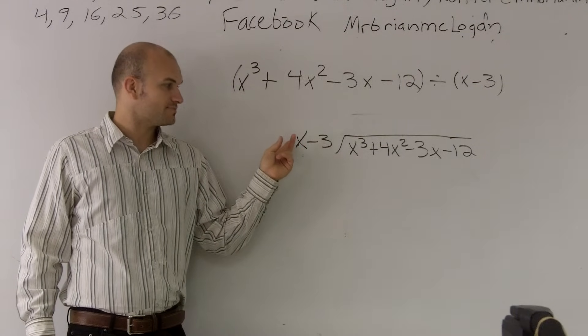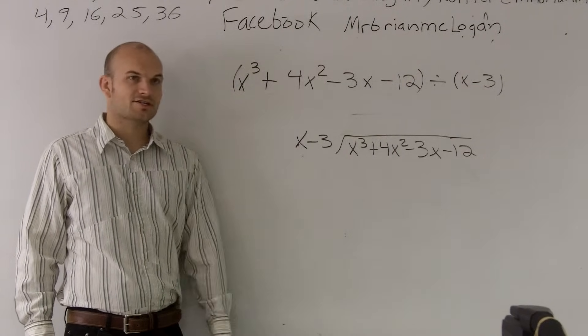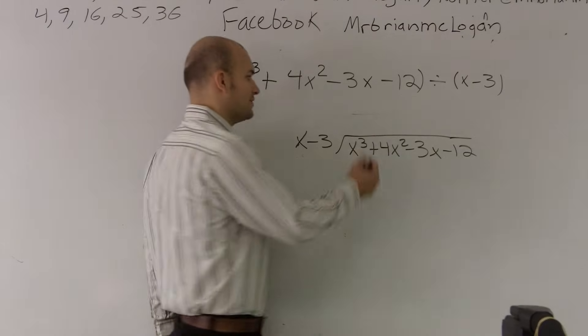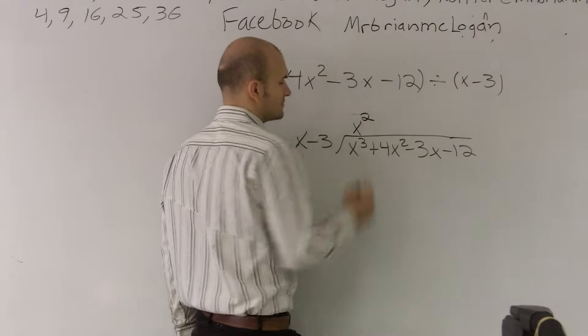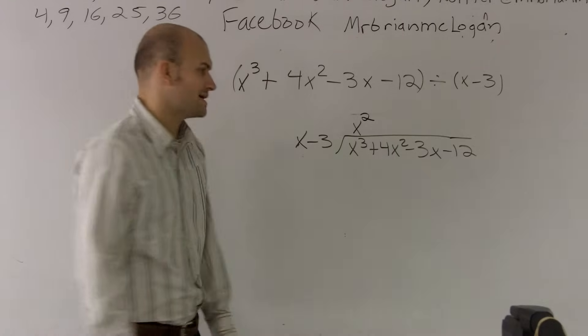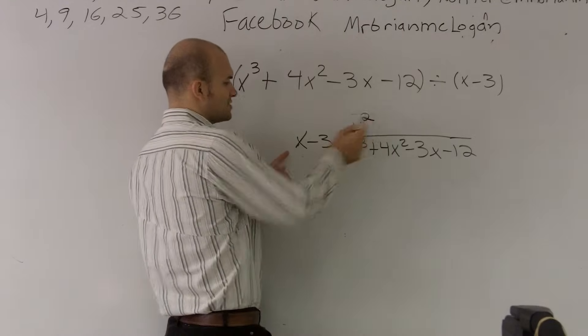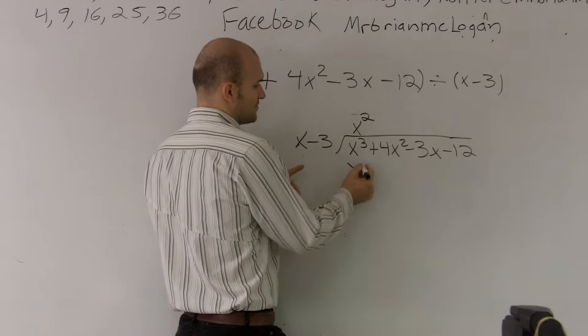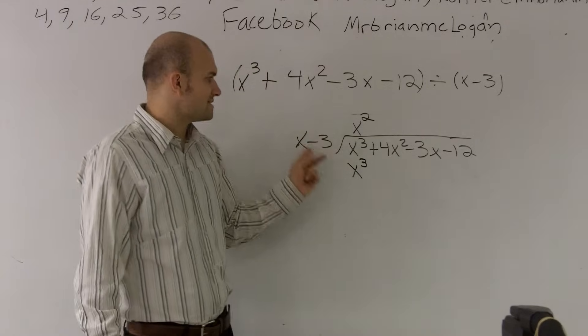So I look at this first. I say x, can that divide into x cubed? And yes, it can. It can go in there x squared times. What do I mean it goes in there x squared times? Well, you can check your work. x squared times x gives you x cubed. So therefore, I know x cubed goes in there x squared times, because those two multiply to give me x cubed.